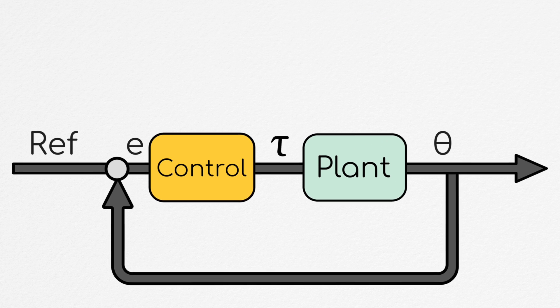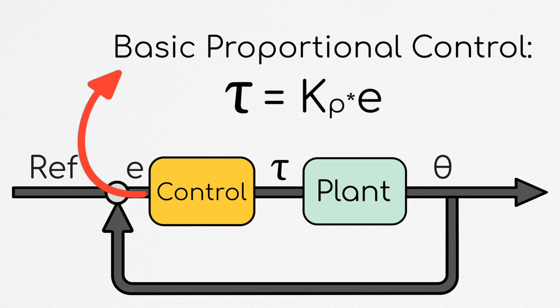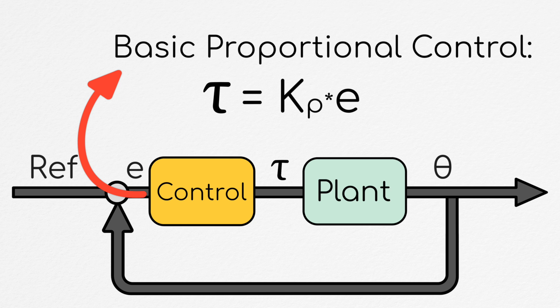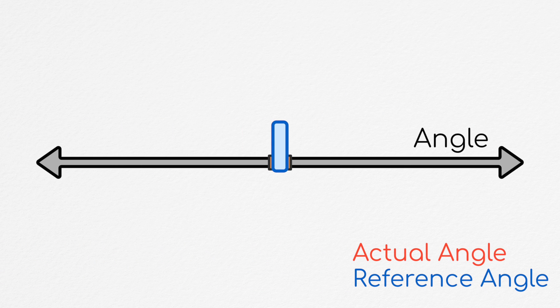The simplest feedback controller we could make is what's known as a proportional controller, with a gain Kp. This would apply a torque to the system which is proportional to the error between the desired position and the motor's actual position. Intuitively, you could think about this controller as connecting the rotor to the desired orientation through a virtual linear spring.